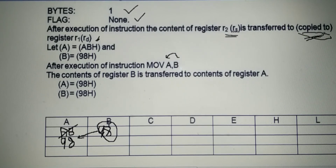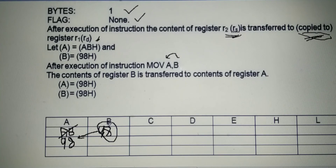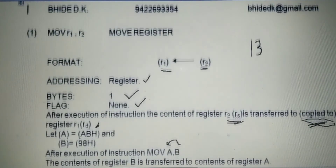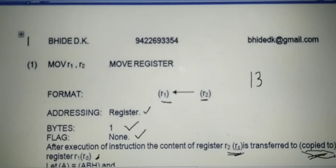The contents of the source register remain the same. Physically, data is not moved from the source register to the destination register — it gets copied. This is an important point to remember related to the first instruction MOV R2 to R1.